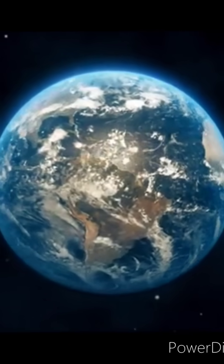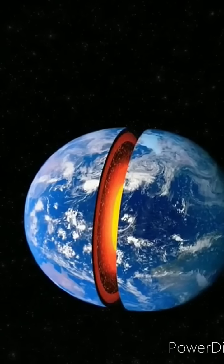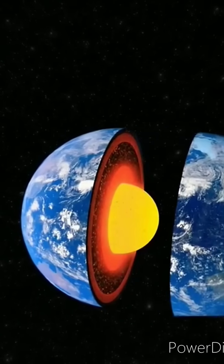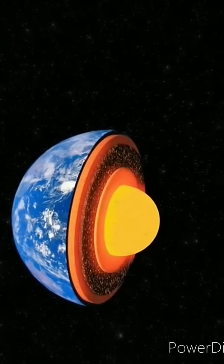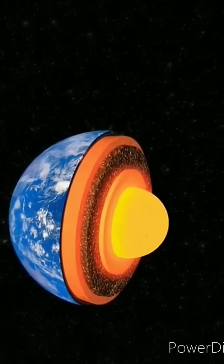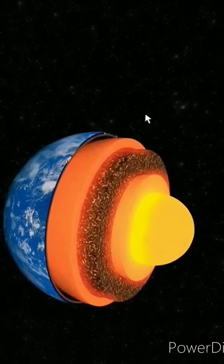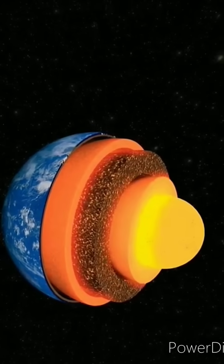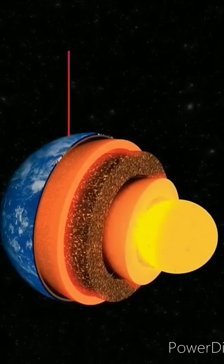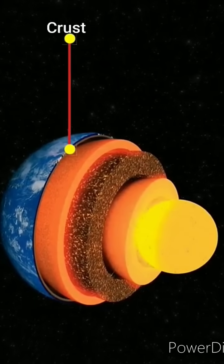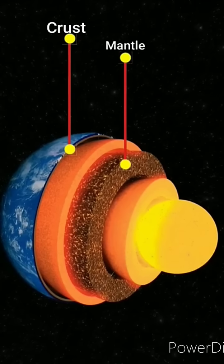Did you know that the earth is divided into three structural layers depending on its chemical composition and its physical properties? The outermost layer is the crust, and between the crust and the core is the mantle.